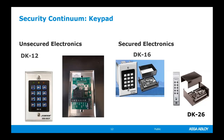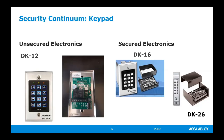The unsecured electronics option, the DK12, is a reasonably priced solution for interior doors. You can delete or add codes easily at the door. However, the drawback is that if someone unscrews it from the wall, all the decision-making electronics are visible in the back, and they could jump the circuit and gain entrance — with no one knowing.